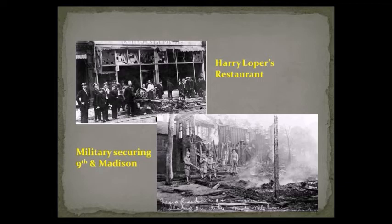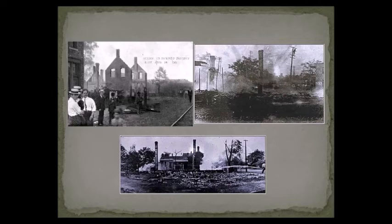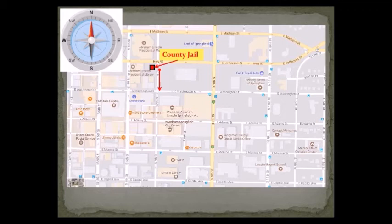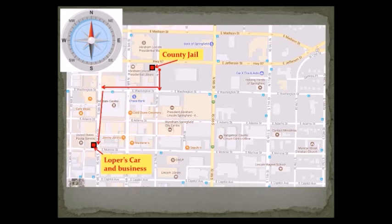Here's another picture of Harry Loper's destroyed restaurant and car. And then on 9th and Madison, the military was called in, securing at least one of the corners from a house in an area already burned down by the crowd. This crowd went all over town — you can see from these photos just burning down anything that was either the black community or anyone that was helping the two guys in jail. It started right here at the county jail on 7th and Jefferson, where the two guys were told to disperse. The crowd went south, found out how they weren't there anymore — that a local business owner got them out and sent them to Bloomington in his car.